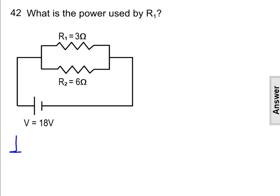In the previous problem, we found the current at R1 is equal to 6 amps, and we know the voltage at any point in the circuit is equal to 18 volts, and the resistance at R1 is equal to 3 ohms.